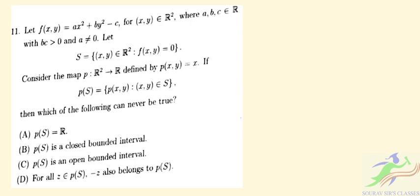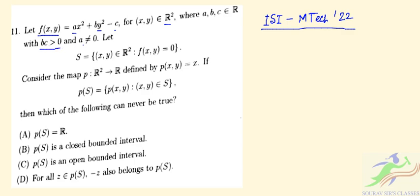Hello students, welcome to short classes. In this video we'll be solving question number 11 from the ISI admission test for the MTEC program, 2022. The question defines f(x, y) = ax² + by² - c, for (x, y) belonging to R², where a, b, c belong to R with b, c greater than 0 and a not equal to 0. Let S be the set of (x, y) in R² such that f(x, y) = 0.